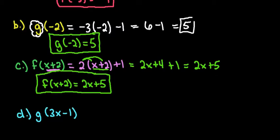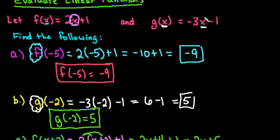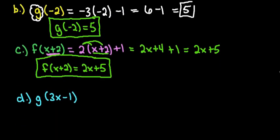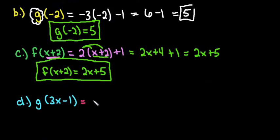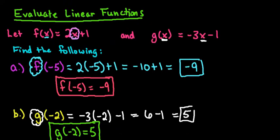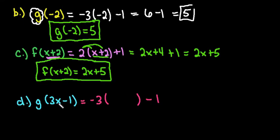The last example that we're going to look at is the same thing. So we have g(3x - 1). That's telling me that in my g equation, I want to replace this x right here with 3x - 1. So the -3 and the -1 do not change. I keep the -3 on the outside of the parentheses and I keep the -1. My x is going to be replaced with the 3x - 1. And then I simply simplify this function.